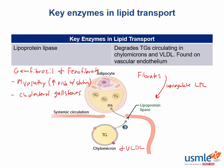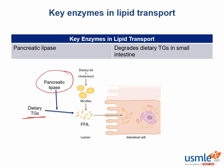Pancreatic lipase works within the intestine to convert dietary triglycerides into free fatty acids for absorption. An important point to note is that all lipases degrade triglycerides into free fatty acids, whether this be within the intestine, within the adipocyte, or within the plasma. That wraps us up for key enzymes in lipid transport.